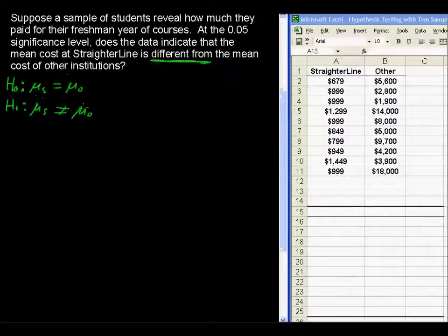In words, we could write the alternative hypothesis as the mean costs are different.